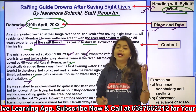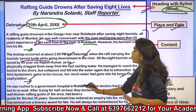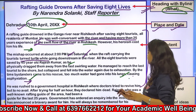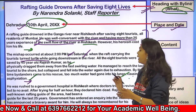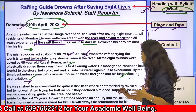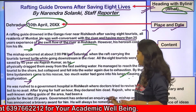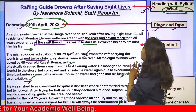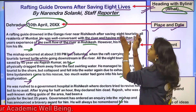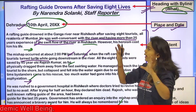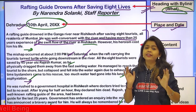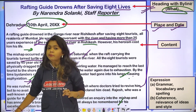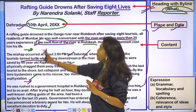Then again you will leave a line in between, and the last paragraph is the conclusive paragraph: He was rushed to a government hospital in Rishikesh where doctors tried to revive him but to no avail — he did not survive. After trying for half an hour they declared him dead. Rajesh, who was a well-known rafting guide of the area, had been a guide for the last 25 years. Government had ordered an inquiry into the mishap and announced a bravery award for him. He will always be remembered for his excellent devotion to duty. So you will cover your report. Basically remember: first write the heading, then the by-line with name, designation, place name and date in a particular format. Then the main body divided into three paragraphs, leaving a line after each paragraph. Write the name in the by-line at the beginning — many children write the name at the end, which is wrong.